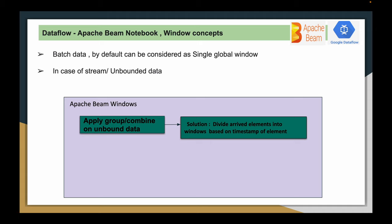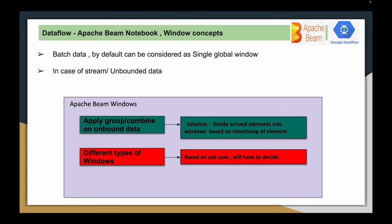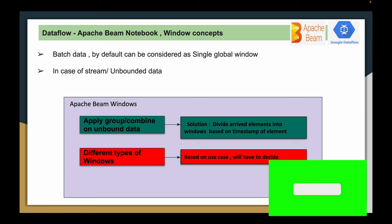For example, the data which is continuously coming into the PCollection — if you have to apply some group or combine operation on top of continuously coming data, it is impossible because you won't have all the elements at any given point of time. So in such cases, you have to divide the available elements into windows based on the timestamps associated with each element in the PCollection. You can divide windows based on your requirement: fixed window, sliding window, session window, or even custom windows.